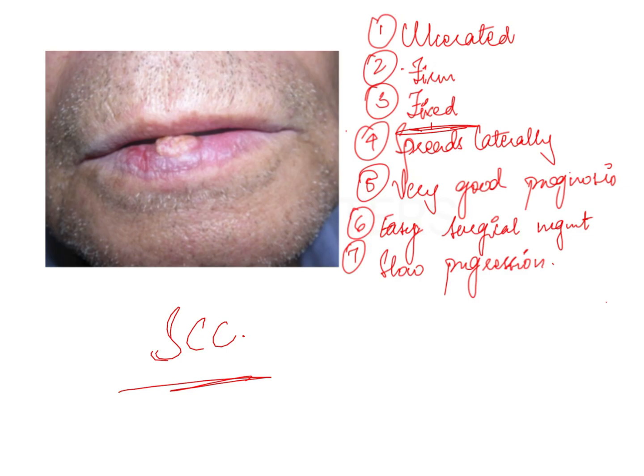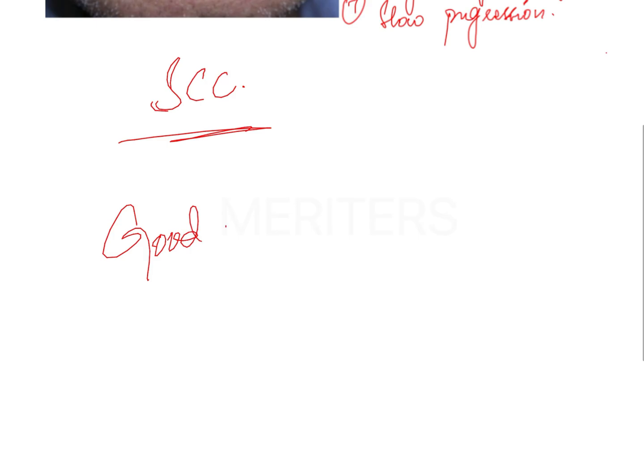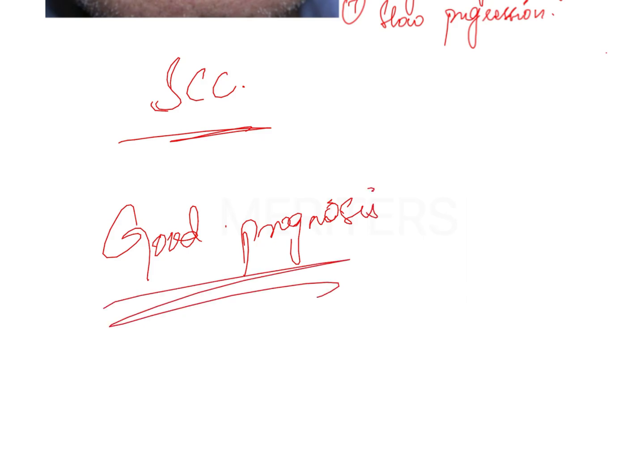One important point to remember is that squamous cell carcinomas of the lip have a very good prognosis. These tumors do not spread rapidly. The worst prognosis is usually for carcinoma of the tongue and the floor of the mouth, because of bilateral lymph circulation — the lymph drainage is vast, making lymph node involvement very quick.